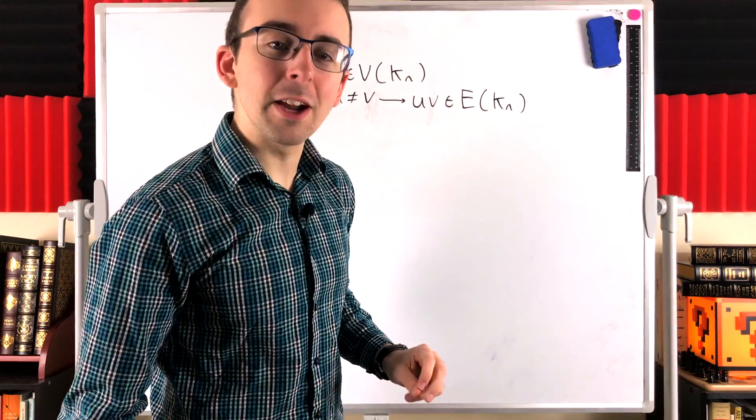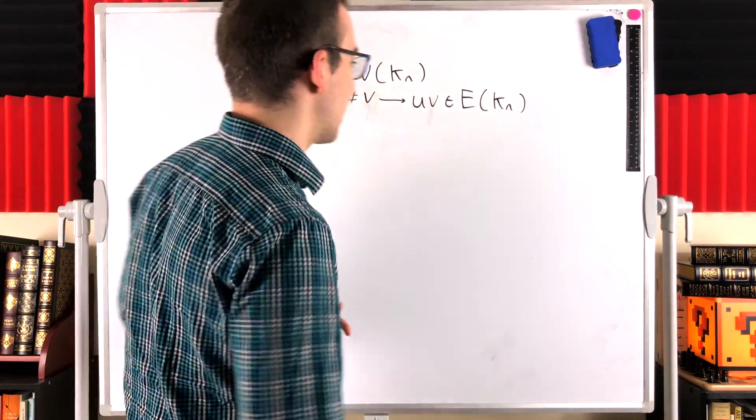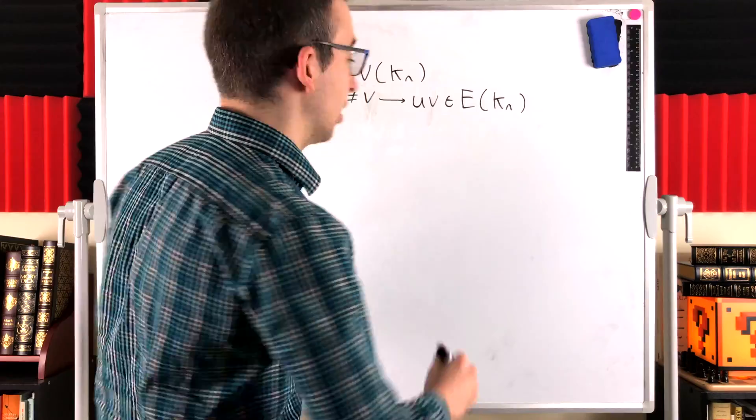Now, what does that mean if u and v are adjacent when we talk about colorings? Well, if u and v are adjacent, they have to be colored differently.